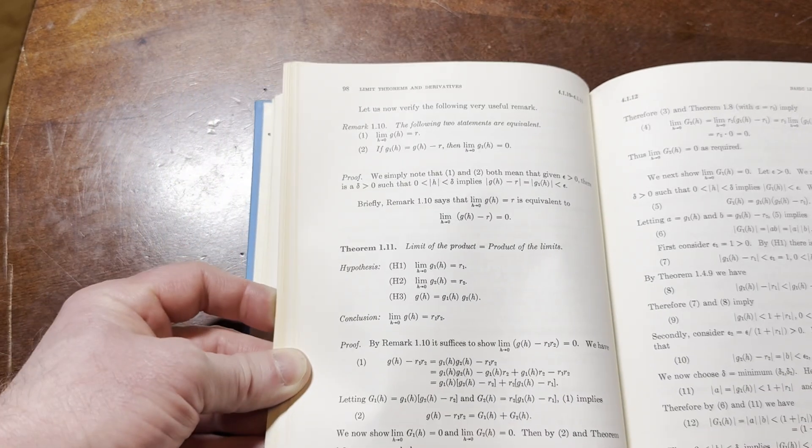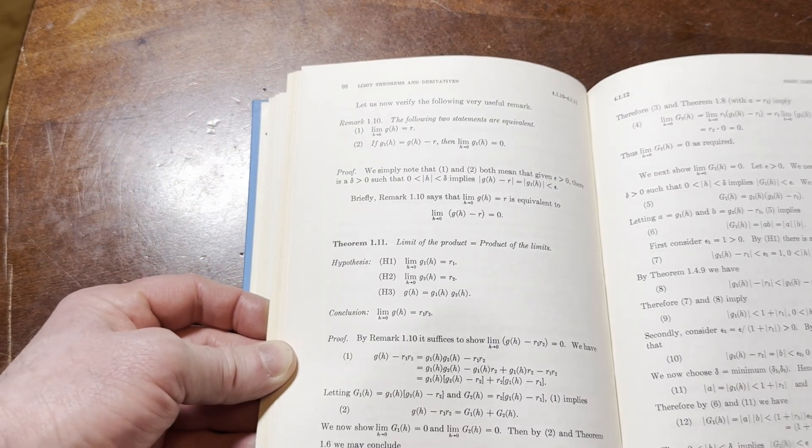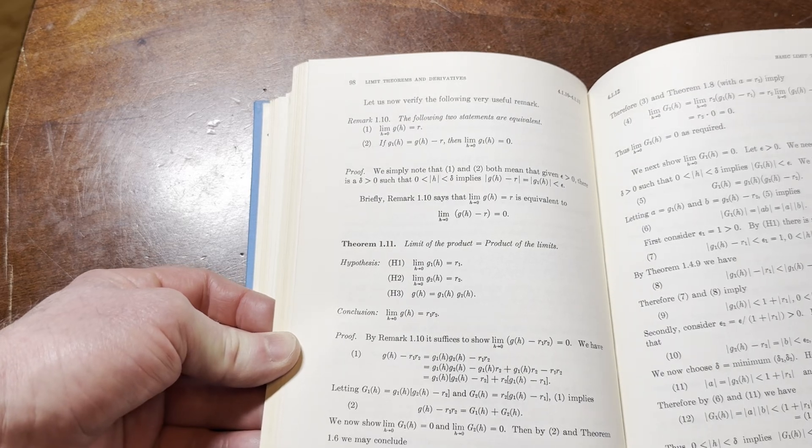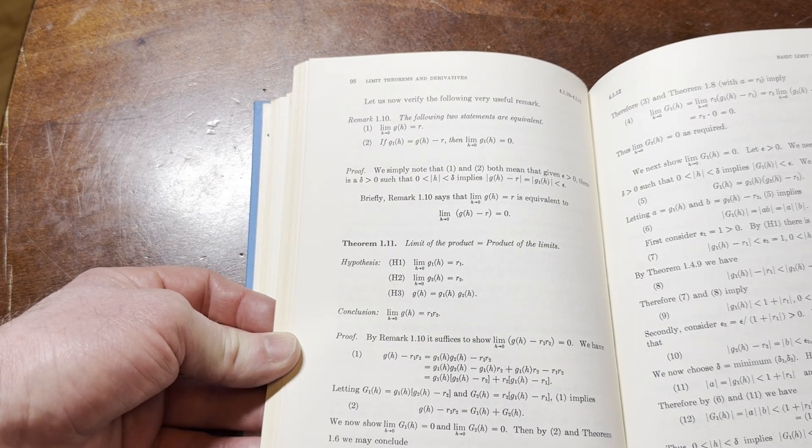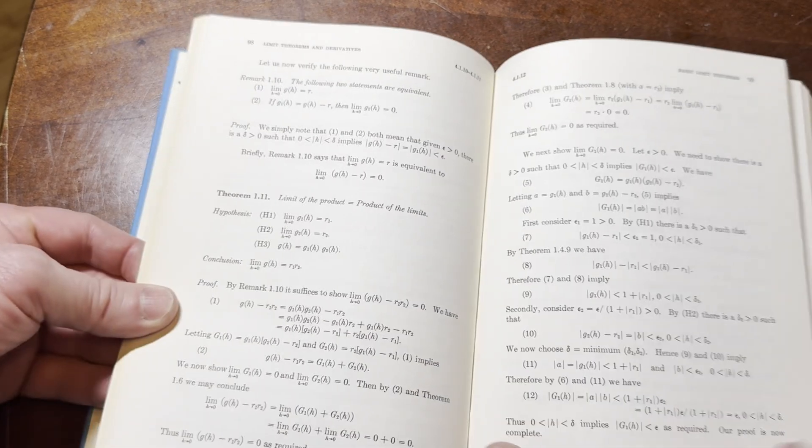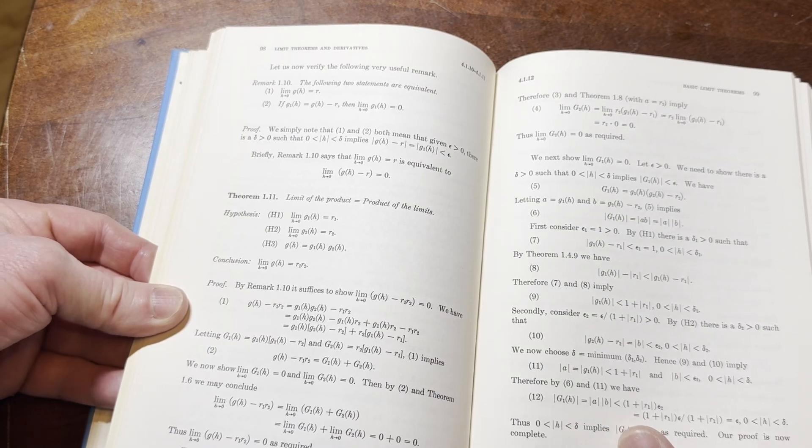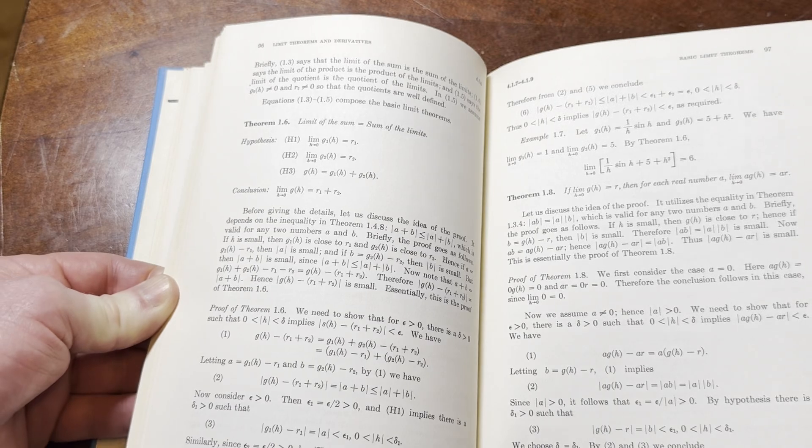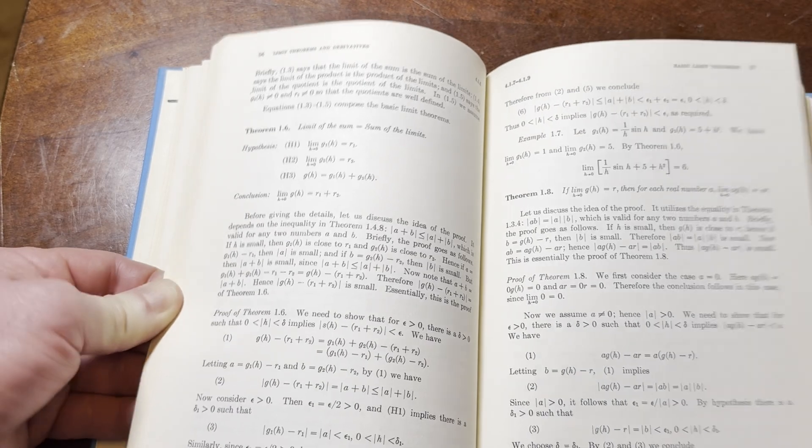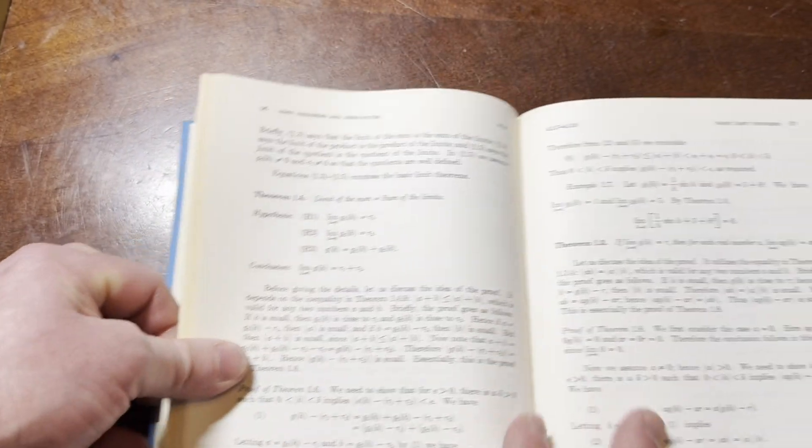What's going on here? The limit of the product equals the product of the limits. That's right, and that's a good way to say it. It's a good way to memorize the formula too. Limit of the sum is the sum of the limits.